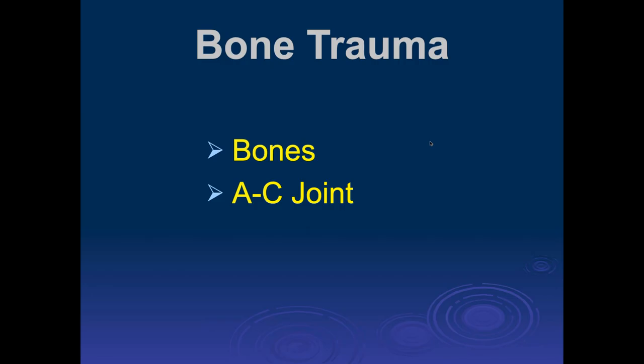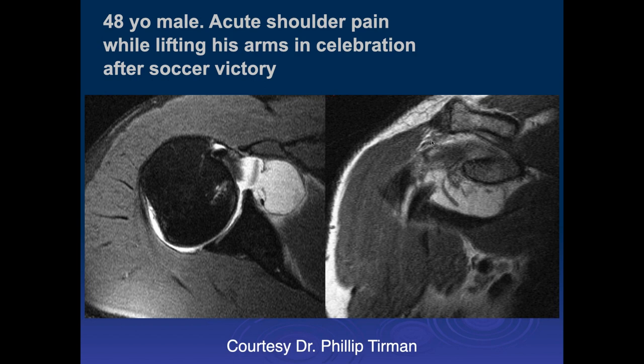Let's go into bone trauma. Jennifer, what do you think of this case? The patient had acute shoulder pain while lifting his arms, which is unusual. I see a cystic structure extending in the region of the subscapularis, and I'm not sure if that's disruption of the anterior capsule or tearing of the subscapularis. It could also be a tear of the superior glenohumeral ligament.